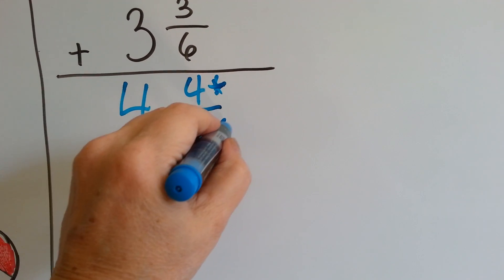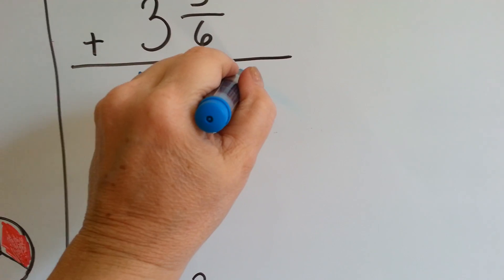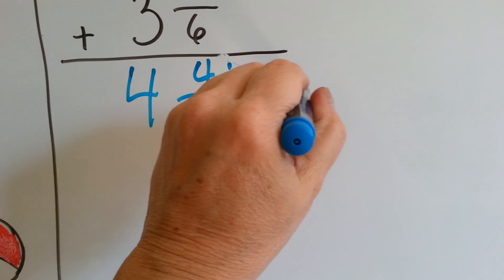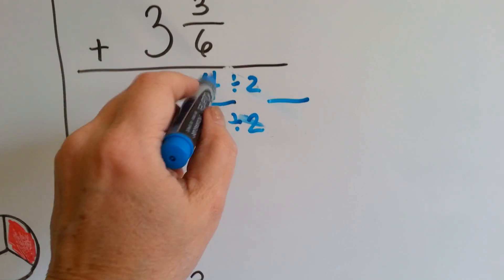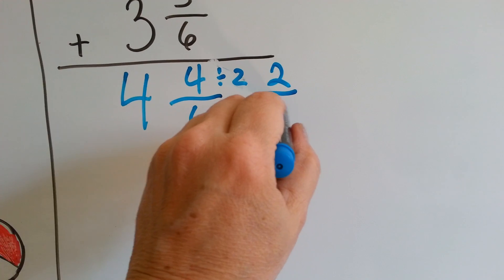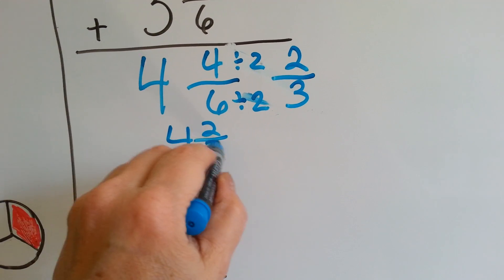If we divide both of these by 2, we can make the fraction smaller. 4 divided by 2 is 2. 6 divided by 2 is 3. So, our answer then becomes 4 and 2/3.